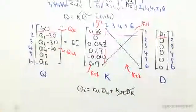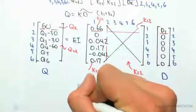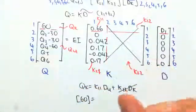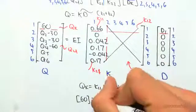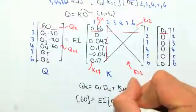So putting all these values in, it would be 60 equals k11, is ei outside of 0.66.